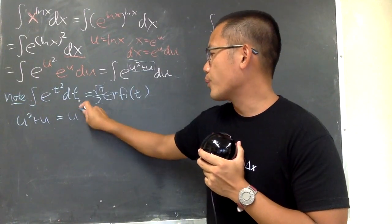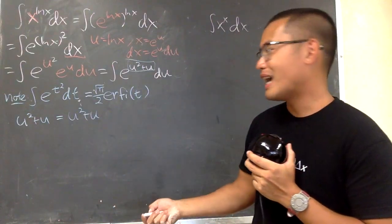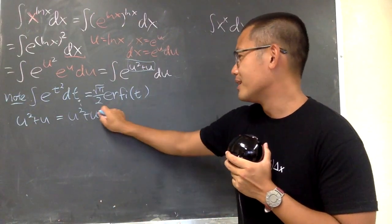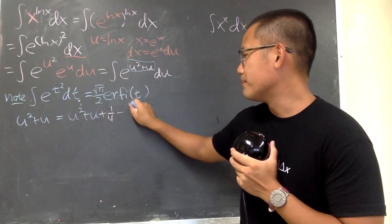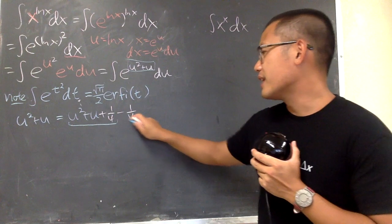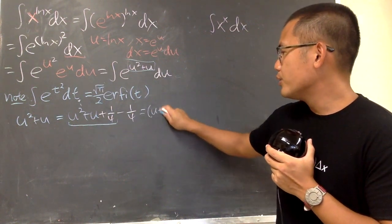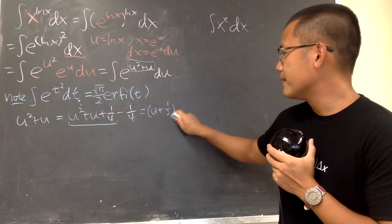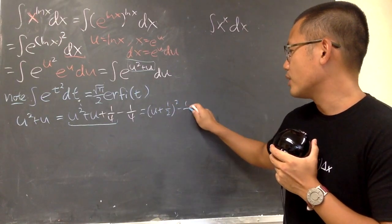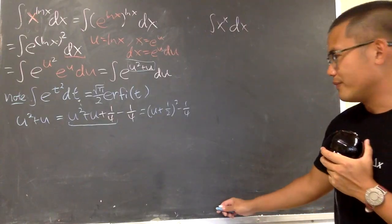We end up with u squared plus u. Half of 1 is just 1 half, and then square that is 1 over 4. So you add 1 over 4 and then minus 1 over 4 after that. Then the good news is, this together is going to give us a perfect square, namely u plus 1 half squared, and then minus 1 over 4. So this is all good.